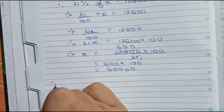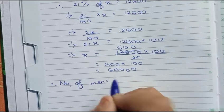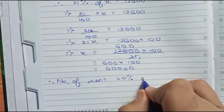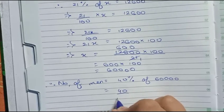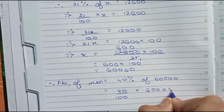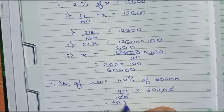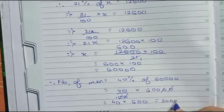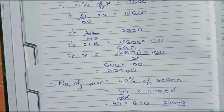Therefore, number of men equals to 40%, that is the percentage of men, of 60,000. It equals to 40 by 100 into 60,000. So you cut the zeros. So it becomes 40 into 600, that is 24,000. So 24,000, that is our final answer for this question.